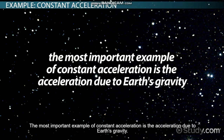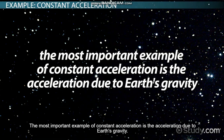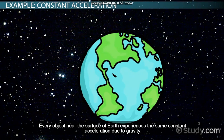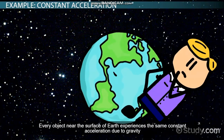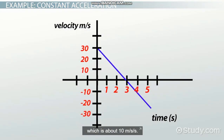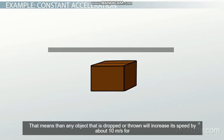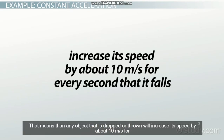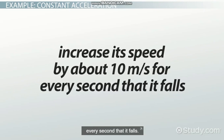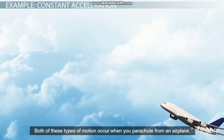The most important example of constant acceleration is the acceleration due to Earth's gravity. Every object near the surface of the Earth experiences the same constant acceleration due to gravity, which is about 10 meters per second per second. That means that any object that is dropped or thrown will increase its speed by about 10 meters per second for every second that it falls.